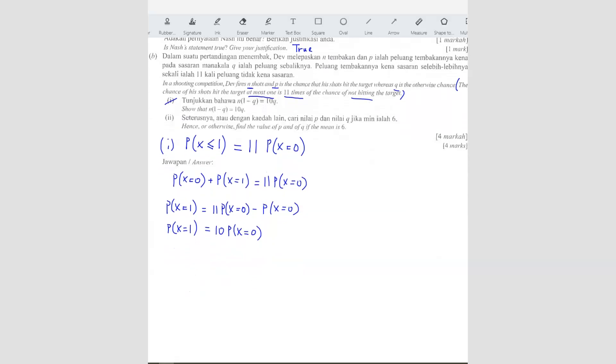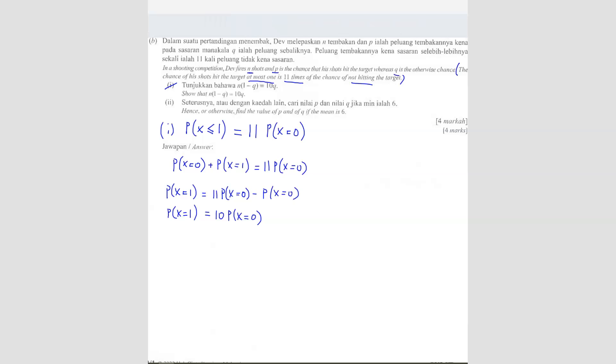So let me just go down a bit. So let us expand this. So this is binomial. So binomial means N C 1, and then P value 1, and then Q value N minus 1.